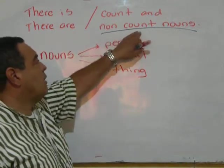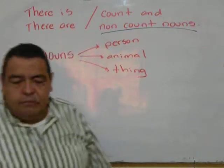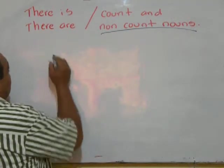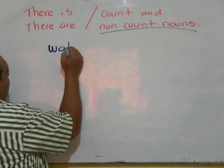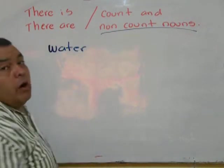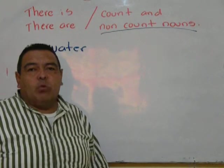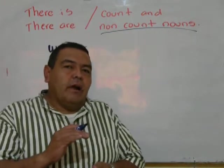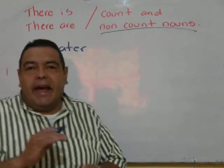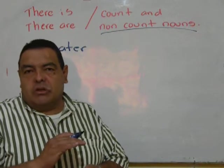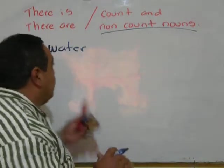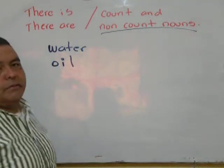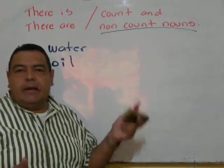Now, water — water is a non-count noun. You cannot count water. You can measure it — yes: a glass of water, a liter of water, a gallon of water — but those are measures. You cannot count it. Oil is the same thing; it's a liquid, it cannot be counted.